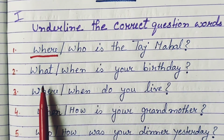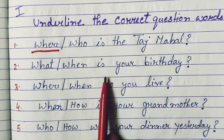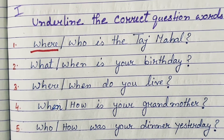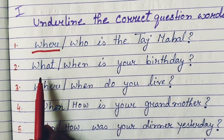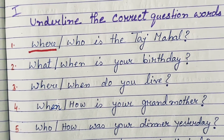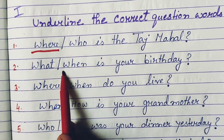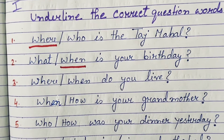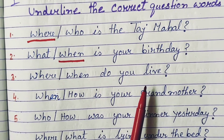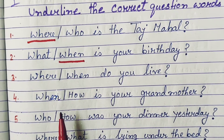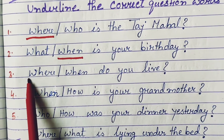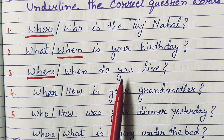Number 2: 'What / When is your birthday?' When we ask about any time or occasion, we use 'when,' not 'what.' Here I am asking about your birthday date, so the correct question word is 'when.' Number 3: 'Where / When do you live?' Here again I am asking about the place where you live, so the correct question word is 'where.' Where do you live.